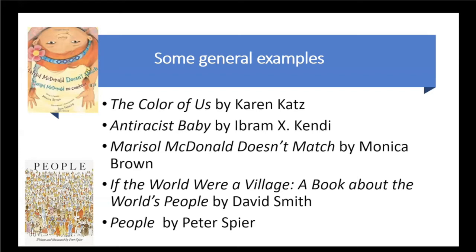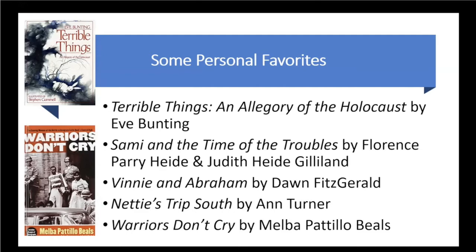People highlights the wide range of differences in the world population in a fun, unusual, informative way and shares the joy in the uniqueness of each individual. Terrible Things is not a fun book. It is a story about animals living happily in their community when terrible things appear and start capturing animals one species at a time. None of the remaining animals stand up for the victims, until no animals are left except one little rabbit who had hidden. The book illustrates the need to stand up for what is right, even if others don't.